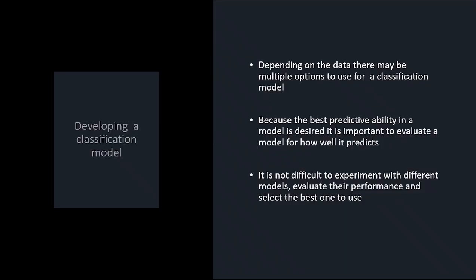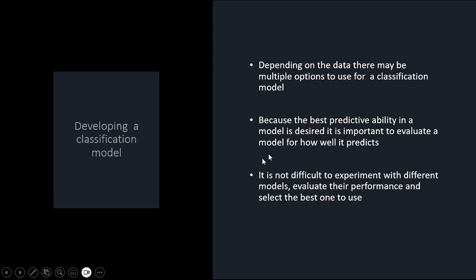In general, there may be multiple options for a classification model and you might want to try multiple models. If you have a binary outcome, you might want to do a logistic model and also a decision tree for the same data, and see which type of classification model is best to use. Don't get married to one particular model type — explore and do different ones. When you have multiple models, you can look at accuracy metrics and figure out which is best. You're looking for the model with the least percentage of misclassifications.